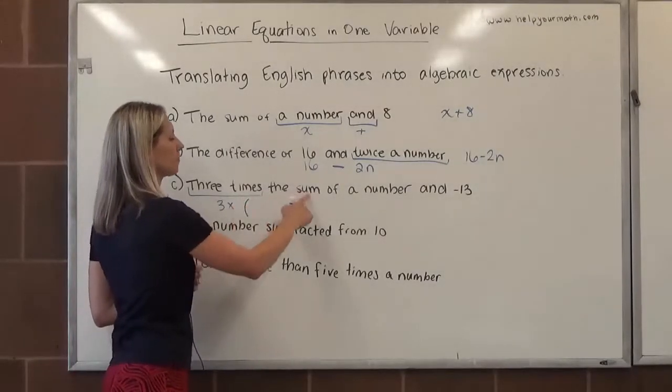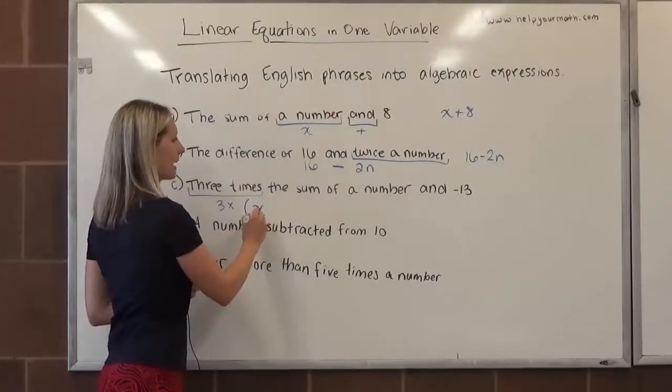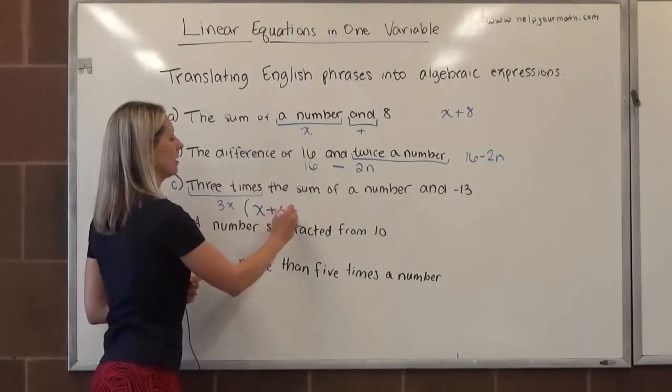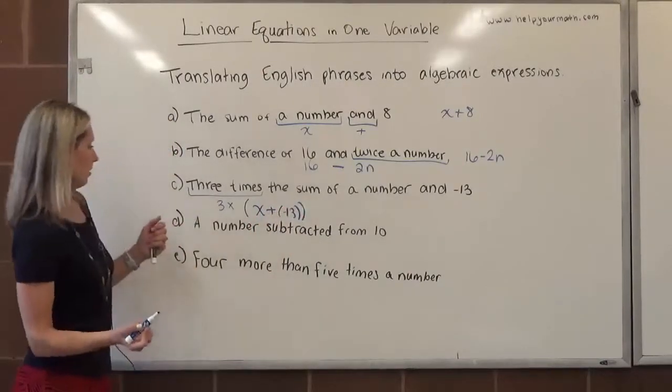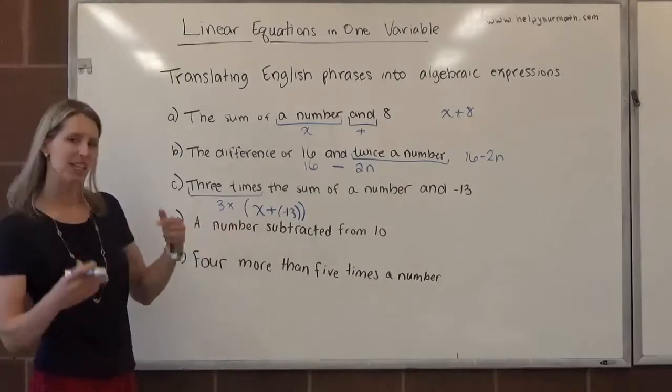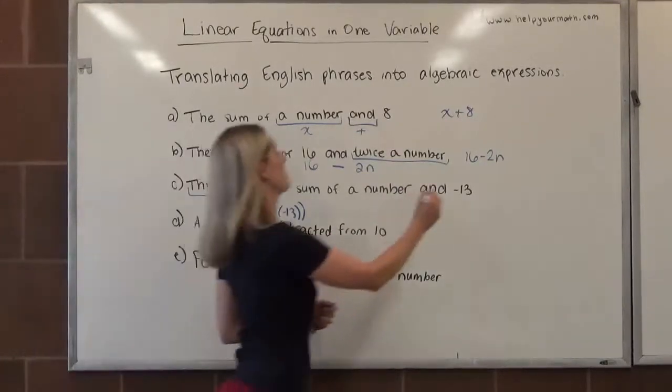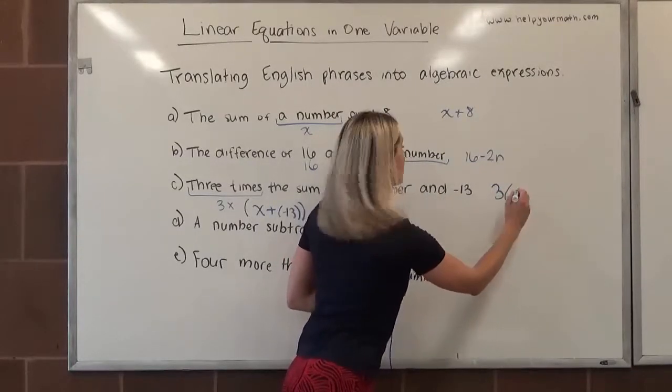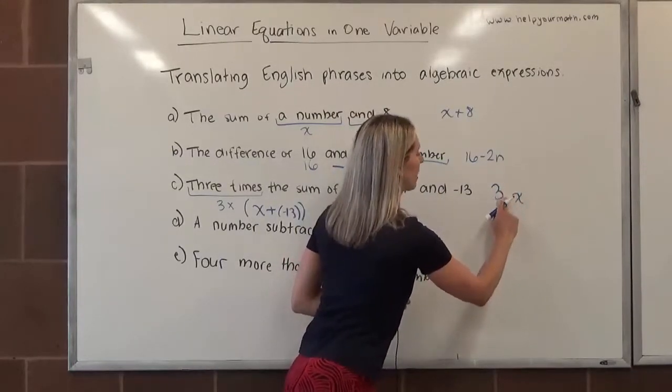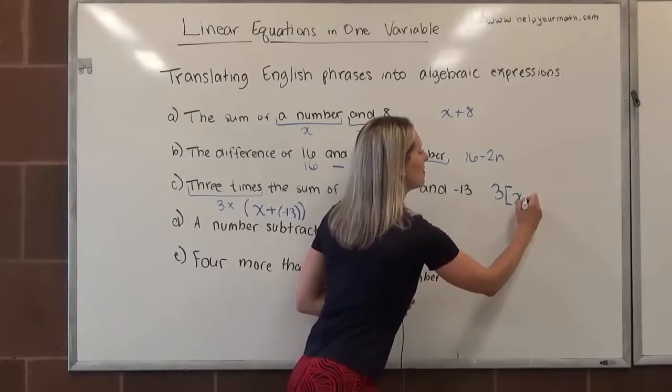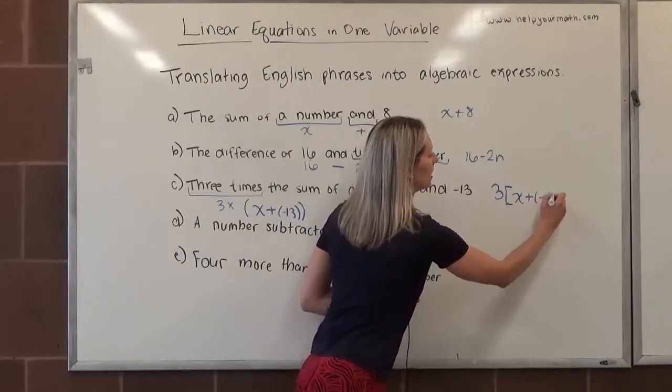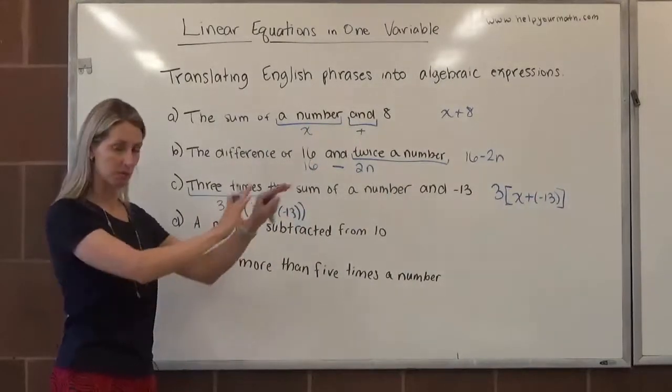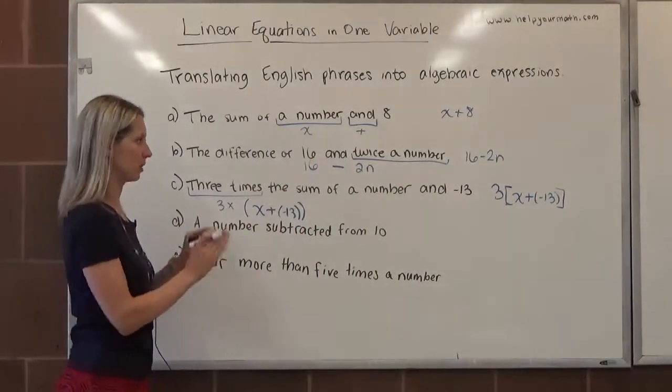So the fact that something is happening to the sum indicates we would need grouping symbols. The sum of a number, that would be x, and is where my plus sign would go, and then negative 13, negative 13. Because I have the double parentheses, I might just switch and use brackets instead. And our final result here would be three times the sum of a number, oh, I just said I was going to use brackets, and I used parentheses, bracket, x plus negative 13. We're just translating, so even though that looks kind of gross and awkward, we're done with the translation.